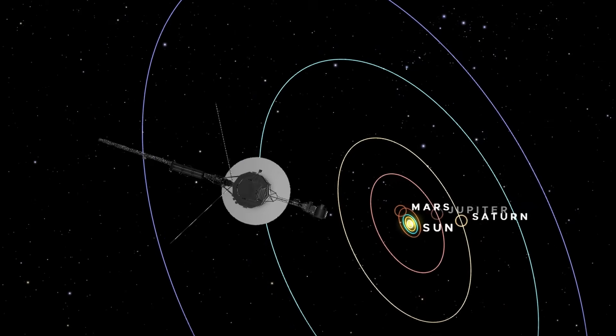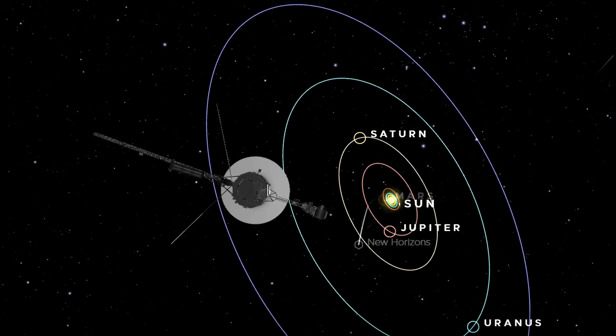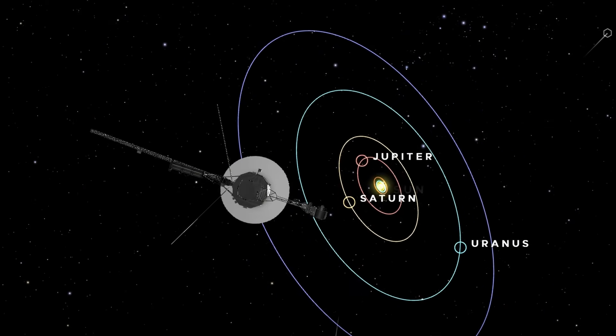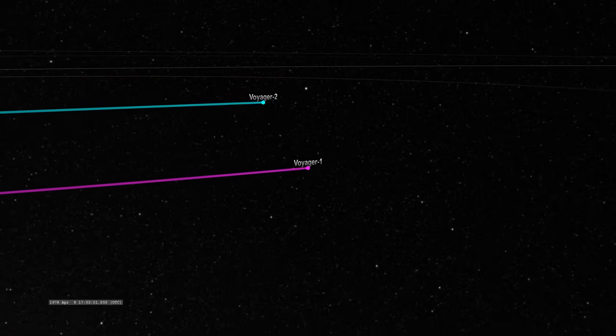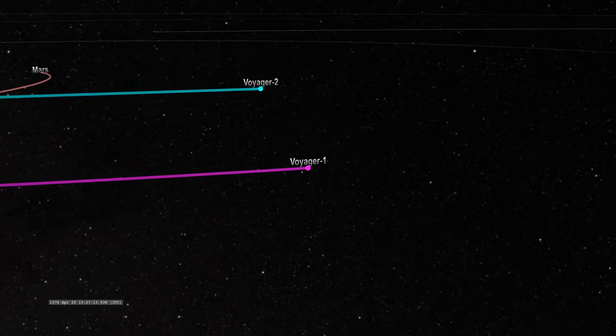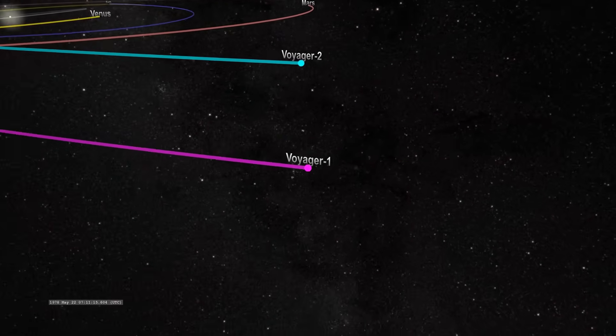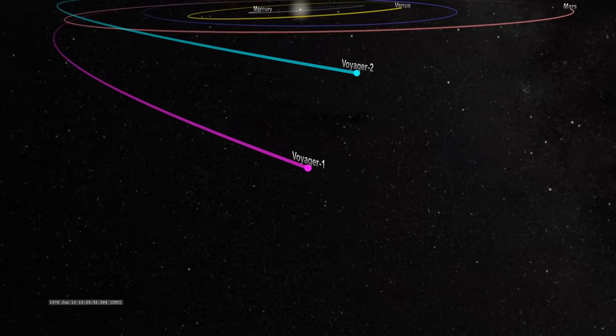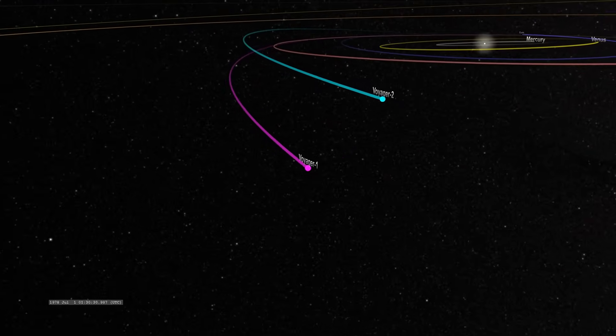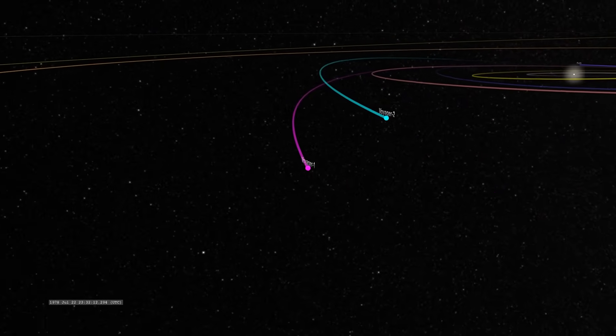After completing their historic grand tour missions to Jupiter, Saturn, Uranus, and Neptune, these two probes continued their solitary journeys toward a place where no man-made object had ever gone before—the cold and bottomless void of interstellar space.